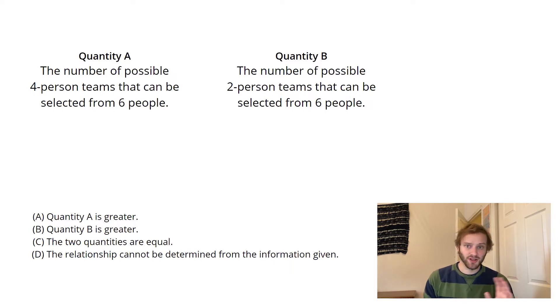I'm actually going to start my calculation here with quantity B, and that's because the number of two-person teams seems a little bit easier than the number of four-person teams, and I like to keep my math life easy when I can.